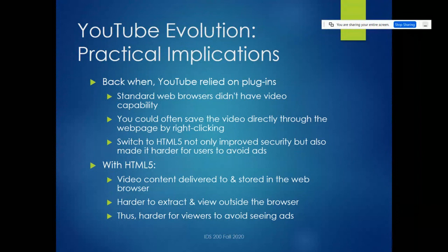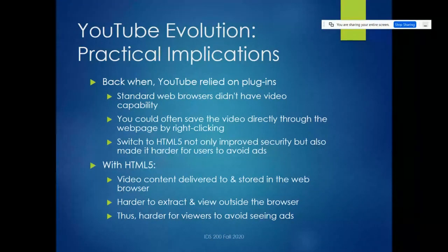Practical implications for YouTube: way back when, YouTube relied on plugins — for example, Flash Player — because standard video browsers didn't have the video capability. You could watch the video through Flash, but you needed a separate application. All that video data has to get stored somewhere in the browser as it's playing — the browser caches video data, there's a buffer for it. One thing you could do with that format was typically save the video directly through the webpage by right-clicking on it. Some video sites that use older code still allow that.